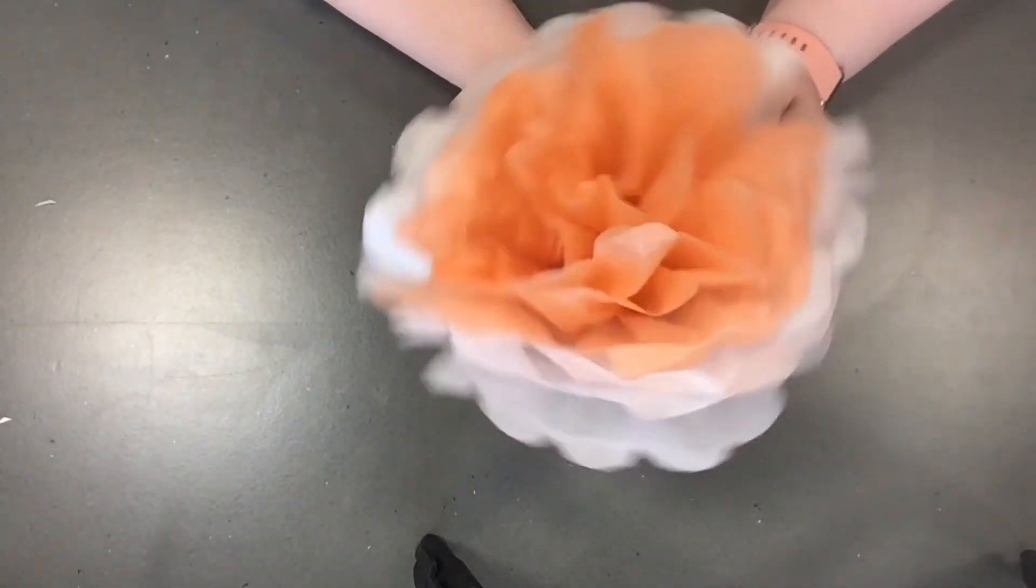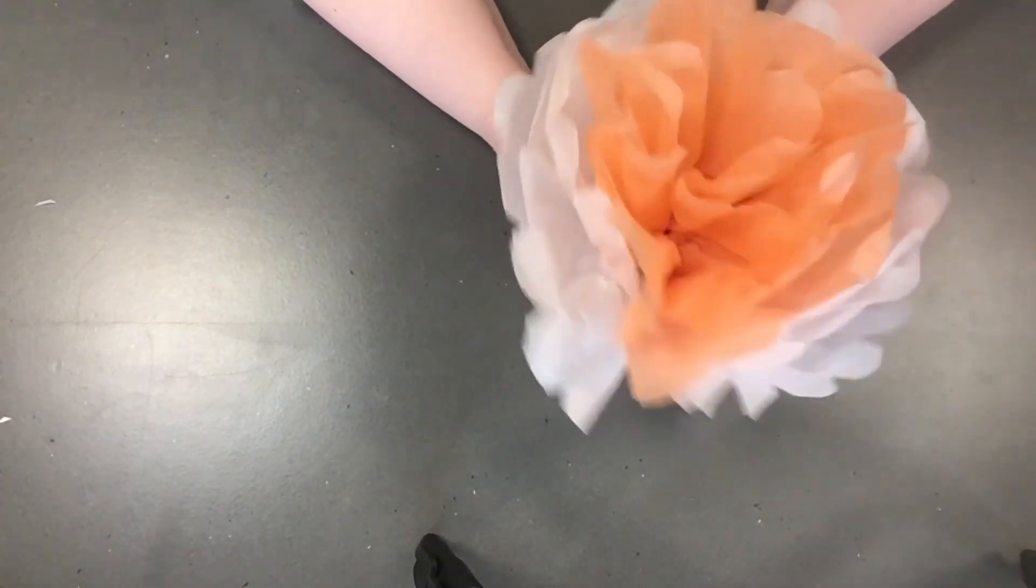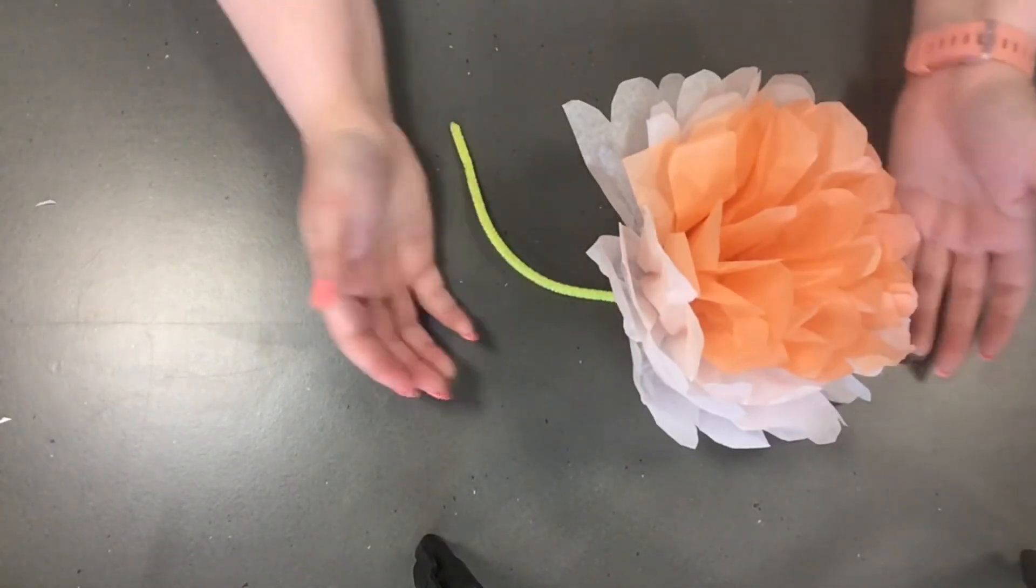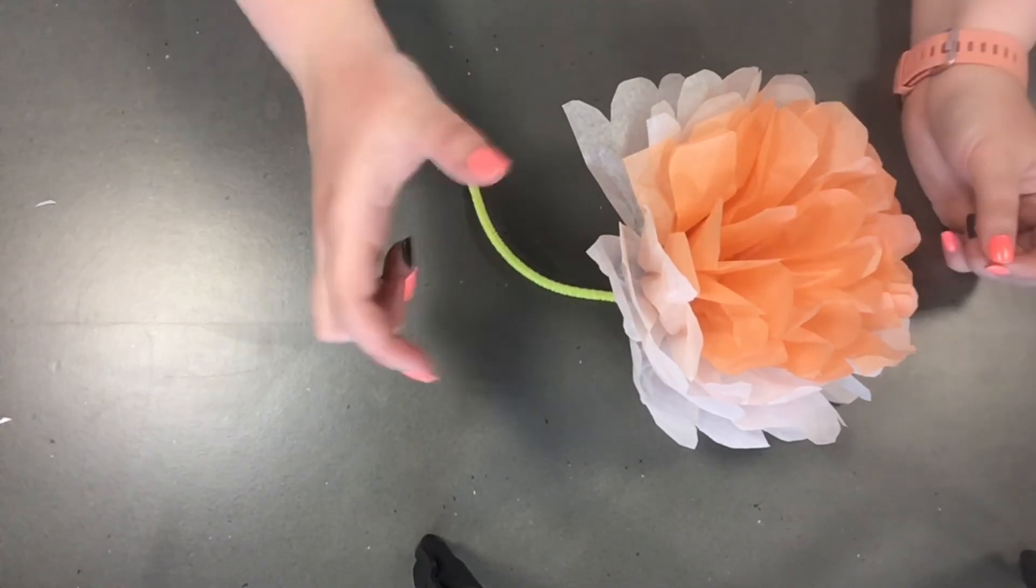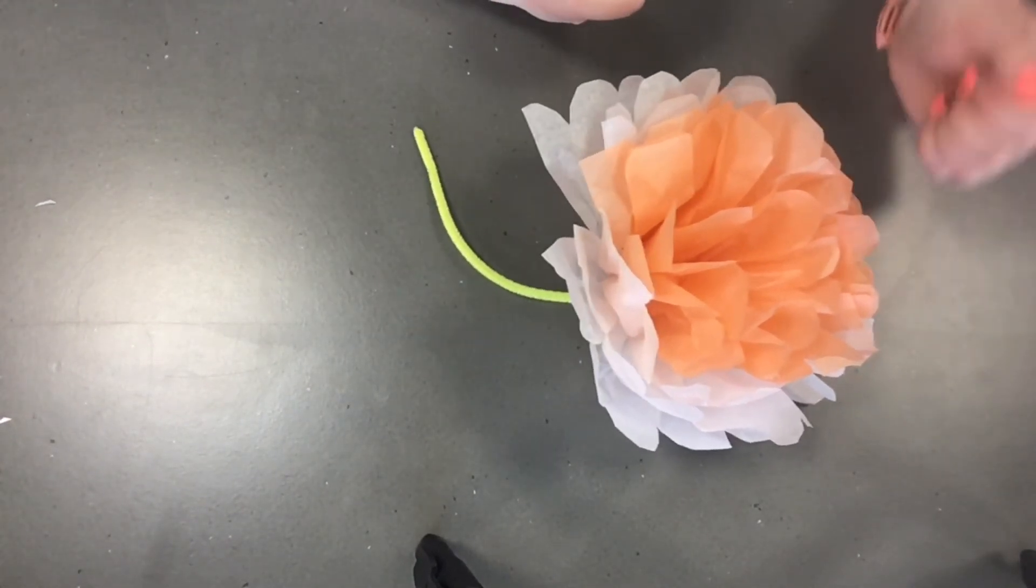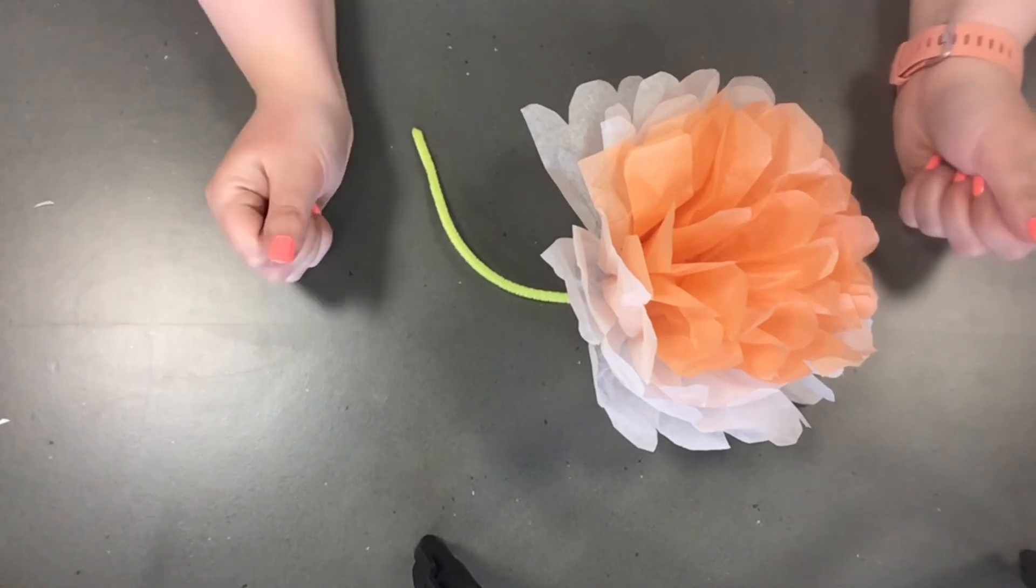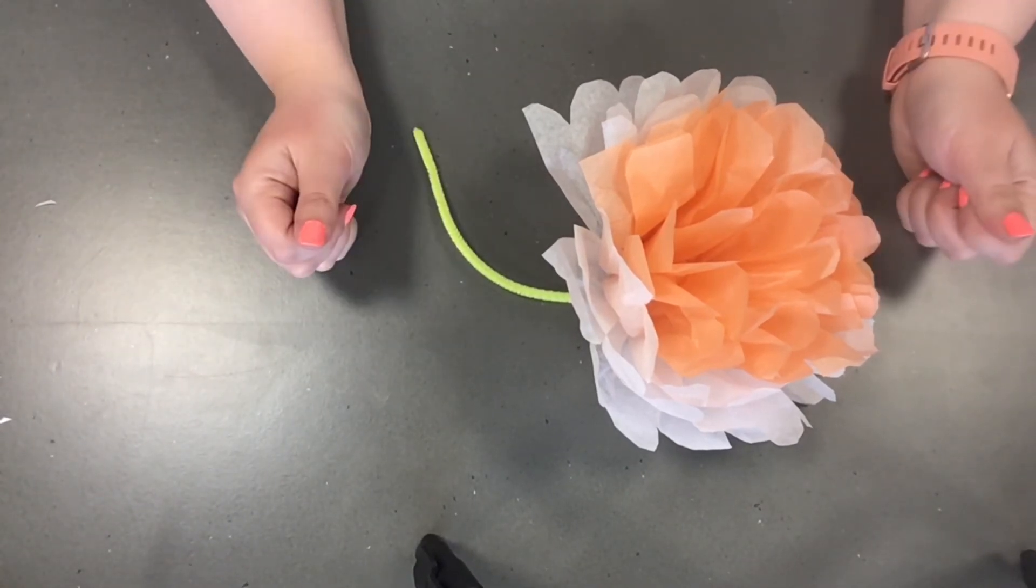You have your really pretty flower here. And for these, you could do a lot of cool stuff. So I did my two colors put together, so it was three sheets of pink and three sheets of white. But you could do a lot of fun stuff and layer different colors, have rainbows. And so that could be really fun.